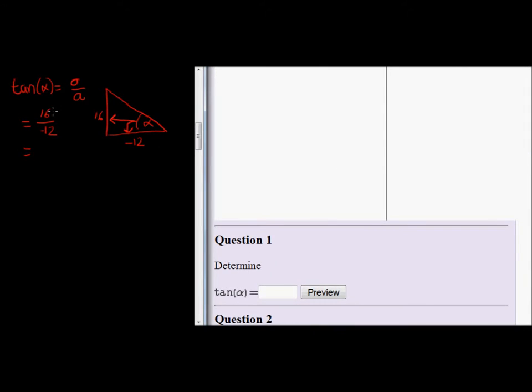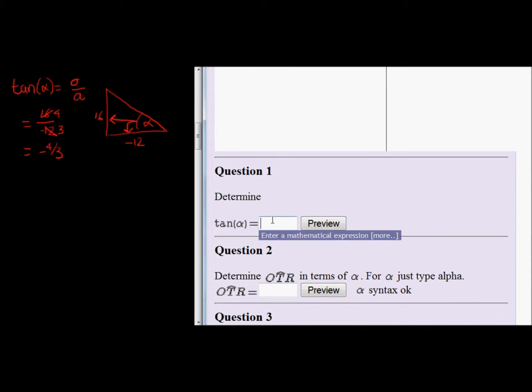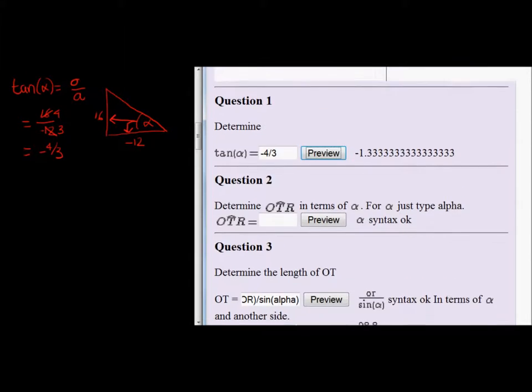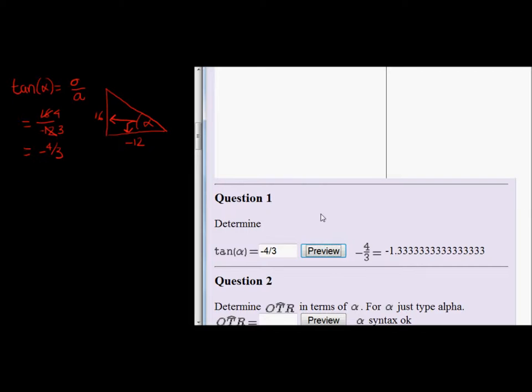Let's just go type in that answer. Actually, let's simplify it first. We can simplify: four goes into it four times and three times, so we have negative four over three. If we preview it, it gives us automatically the decimal answer which will be acceptable, but leave it as a fraction.